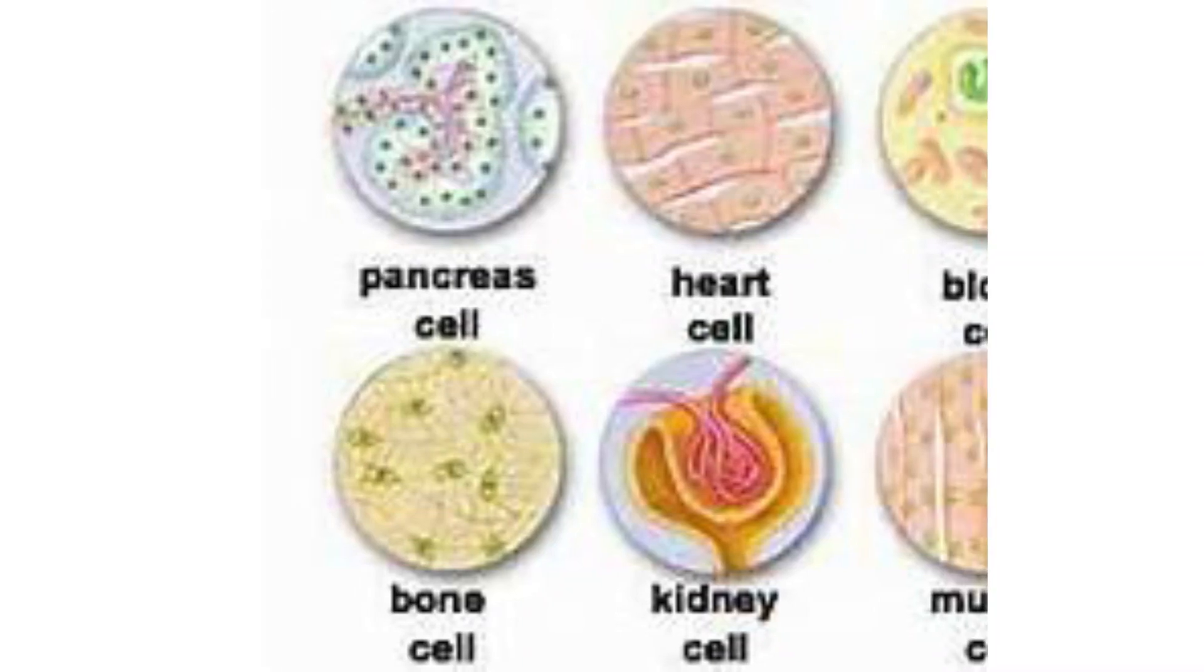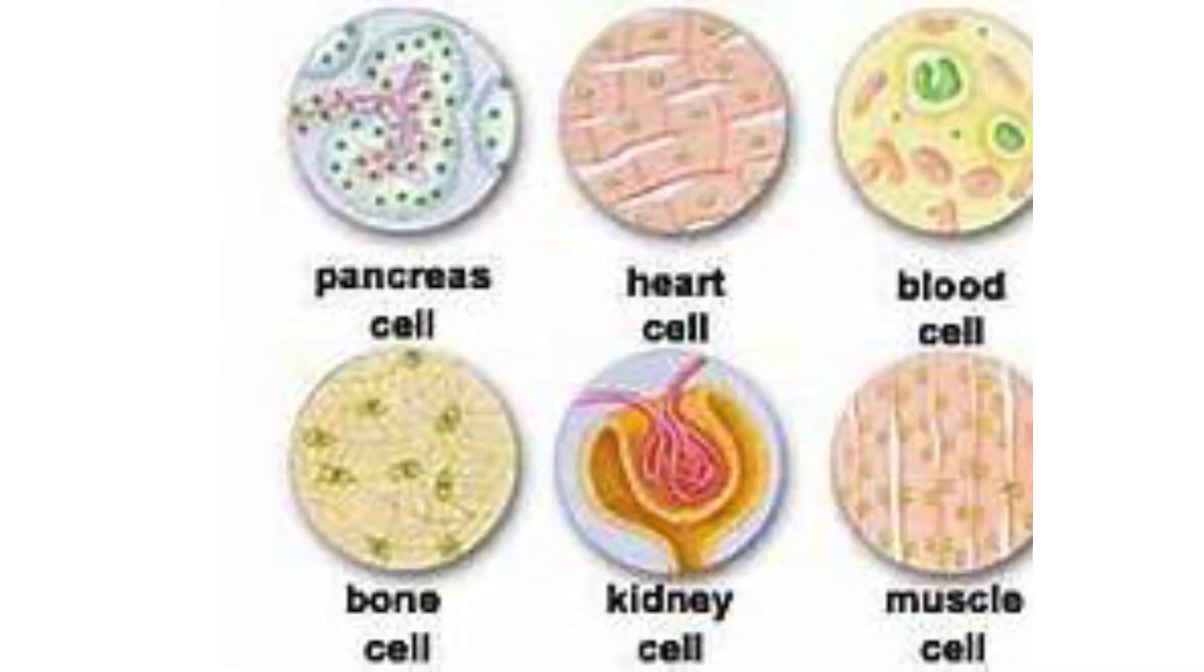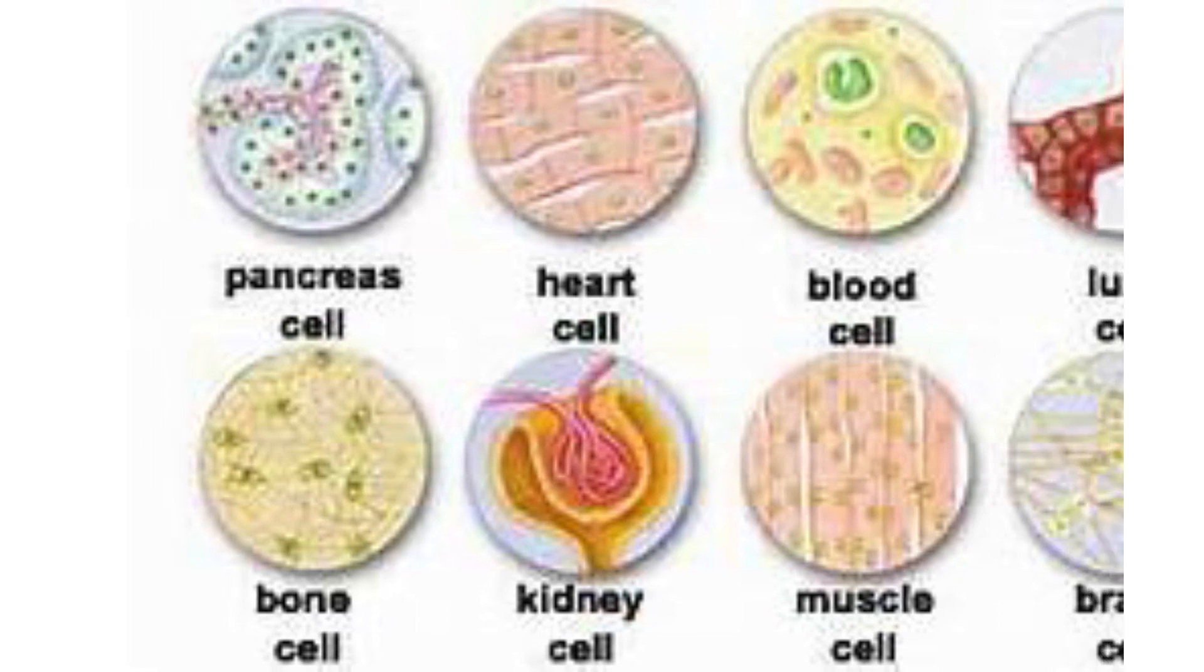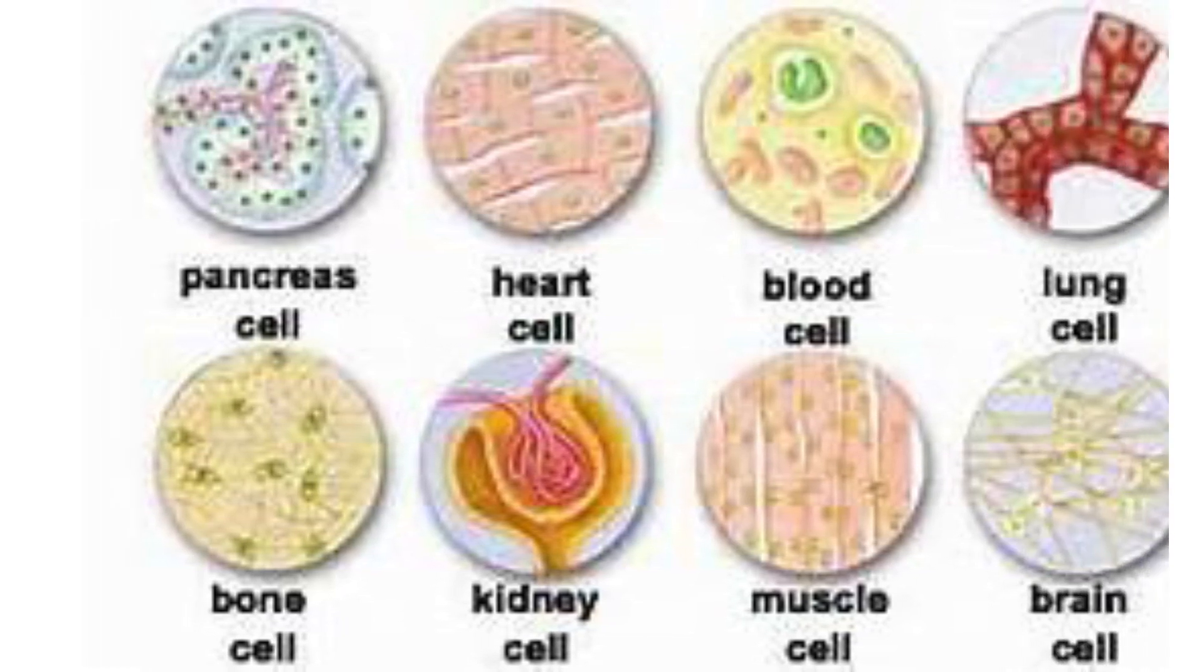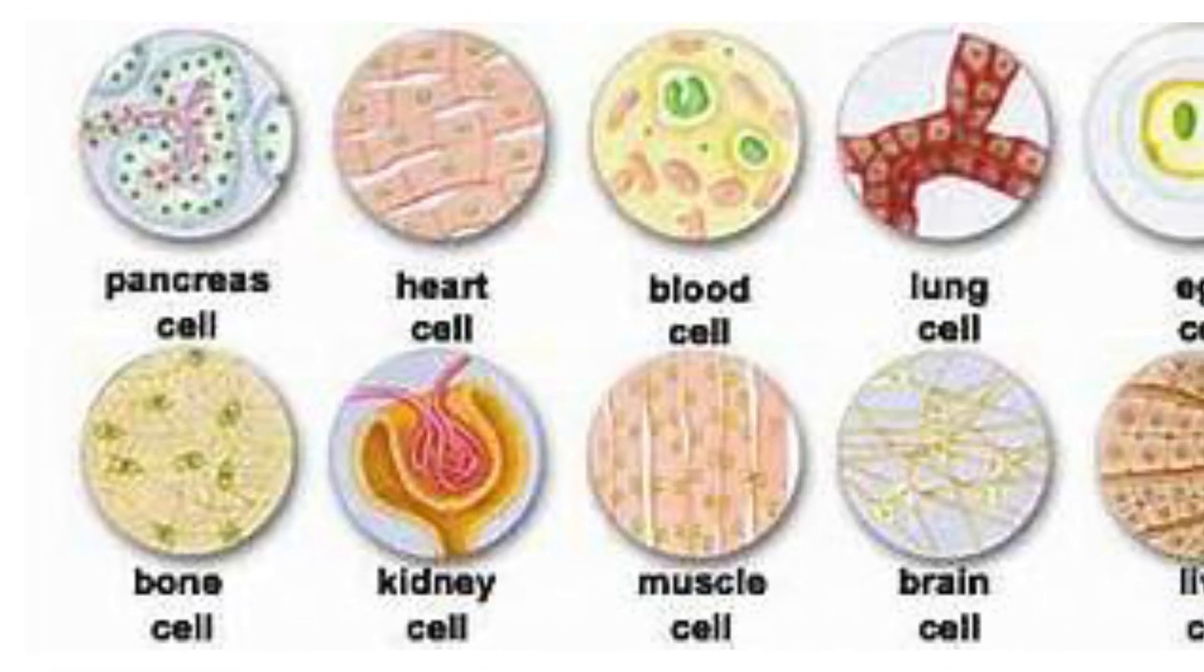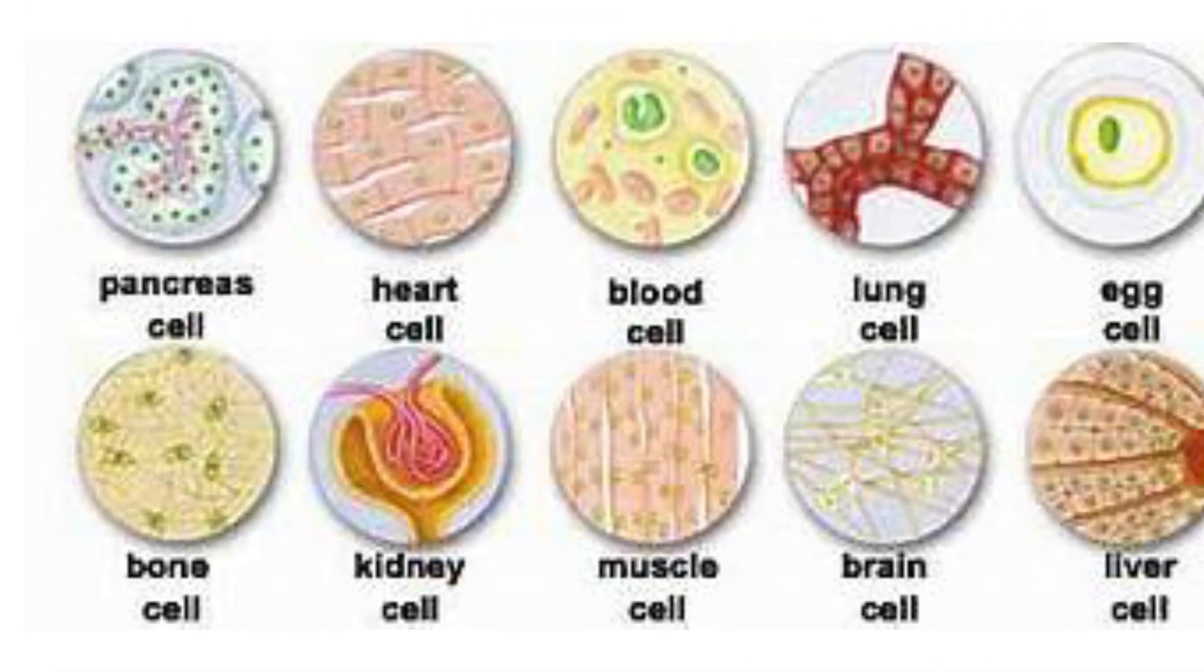It is important to note that cells are different and perform different functions in the body. Because of this, they have different amounts of certain organelles depending on their function. For example, a muscle cell that requires more energy will likely have more mitochondria than another type of cell.